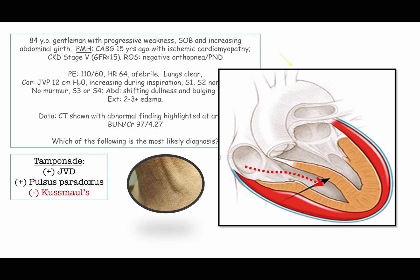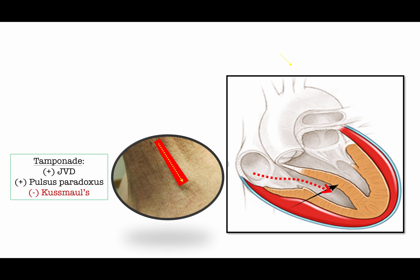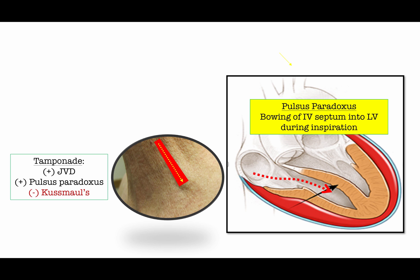Here is another key take-home: tamponade is described by the absence of Kussmaul's. JVD is present, but it does not rise with inspiration. The best way to reconcile this finding is to consider that pulsus paradoxus develops in response to blood returning to the right ventricle — it is the very return of blood that causes bowing of the interventricular septum. For purposes of the boards, the presence or absence of Kussmaul's is a key distinguishing feature between tamponade and constrictive pericarditis.